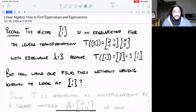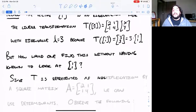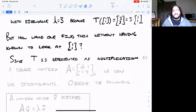We noticed that it was an eigenvector with eigenvalue lambda equals three by just calculating and observing that T of that vector came out to lambda times that same vector. Now the question is how could we have found this without that prior knowledge of knowing to look for the vector [1,1].